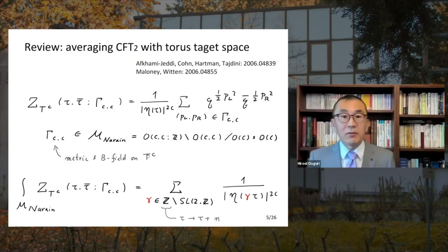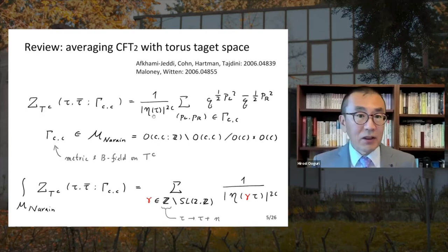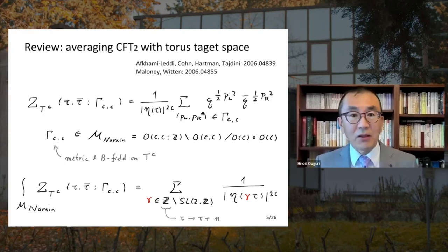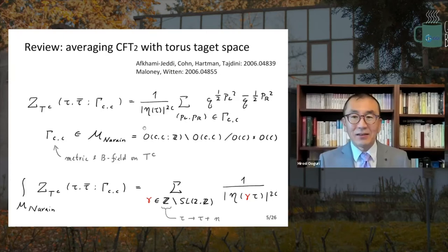The partition function of this CFT is very simple: you have C free bosons, so you have the inverse of the Dedekind eta function, and then a sum over momentum and winding numbers. Q is the exponential of 2πi, and this is the standard partition function in toroidal compactification.